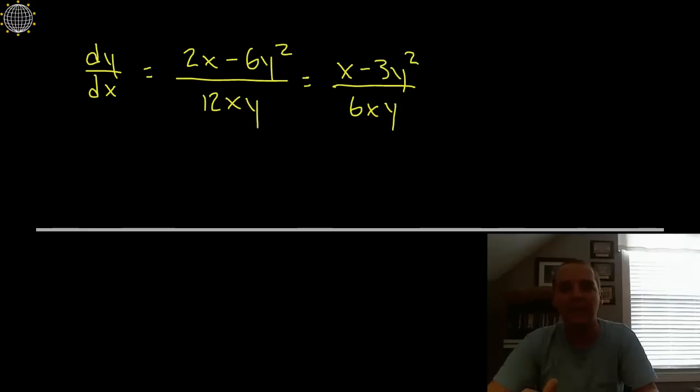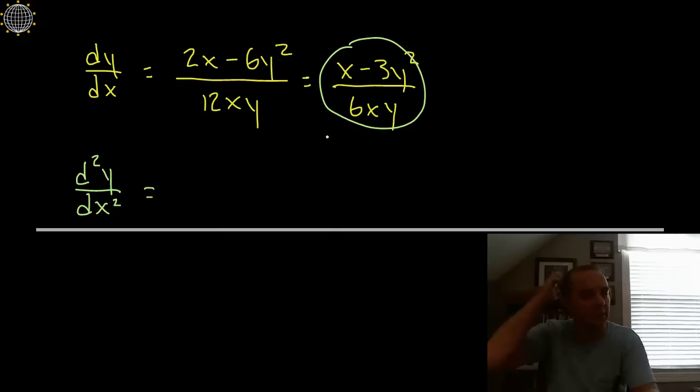If we wanted a second derivative it would look something like this. We would have the second derivative of y with respect to x and that would equal the derivative of this expression. We would need to differentiate that. This needs the quotient rule as we can tell.